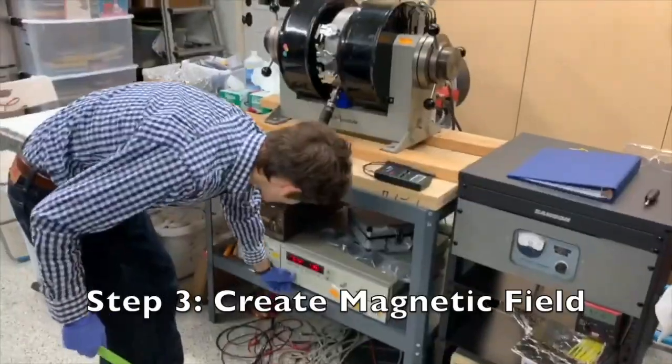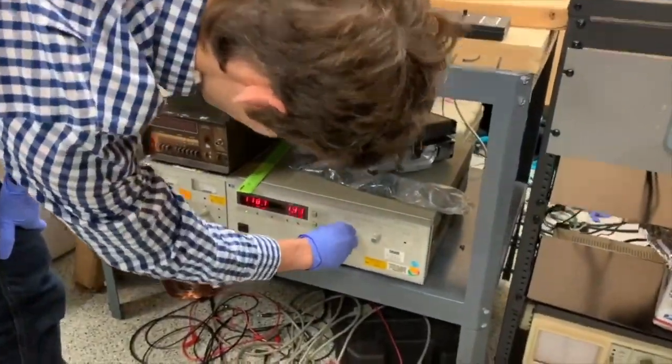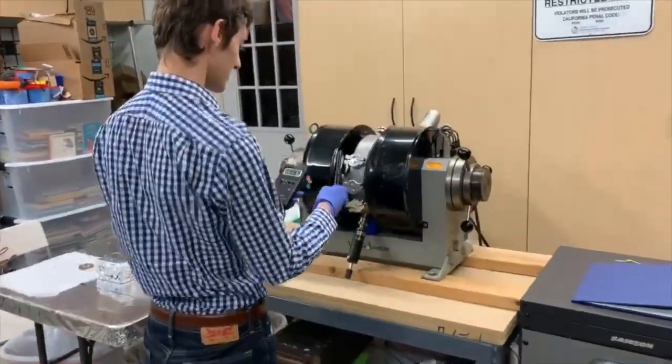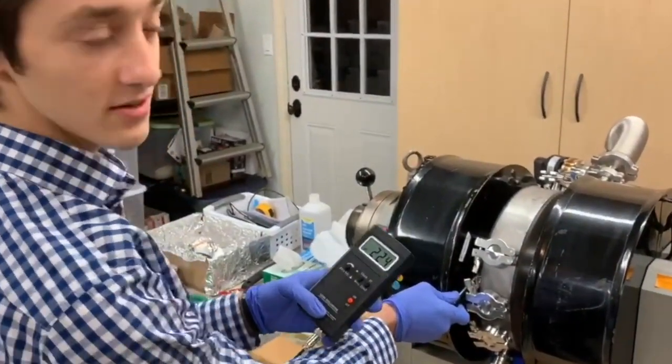The first step is to turn the power supply on and then I set it to about 1.7 amps. Measure on the magnetometer. I measured 0.225 Tesla.